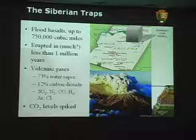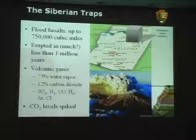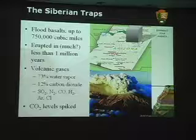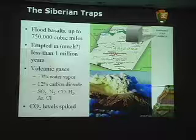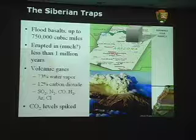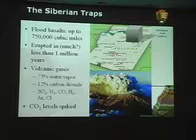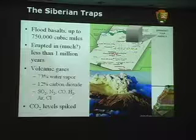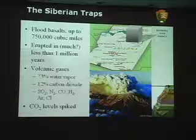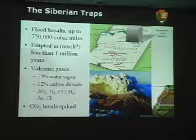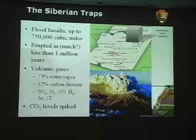When volcanoes erupt, we get volcanic gases boiling up out of them — 73% of which are water vapor. But 12% of the gas is carbon dioxide. This is where our carbon dioxide spike probably started. We also get a mixture of other gases: sulfur dioxide, nitrogen, carbon monoxide, some of which are greenhouse gases in their own right. So the eruption of the Siberian Traps probably triggered a spike in carbon dioxide levels worldwide.